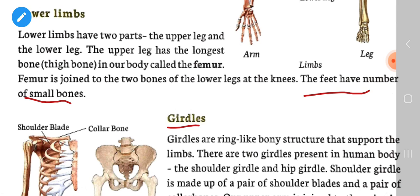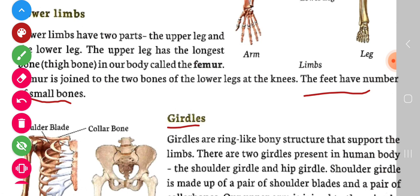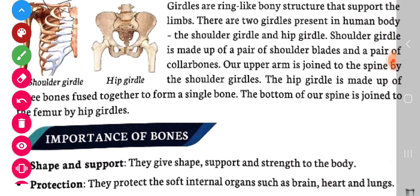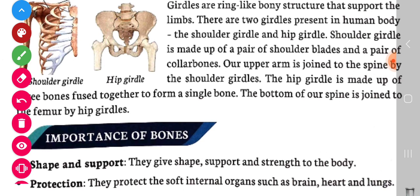Girdles are ring-like bony structures that support the limbs. There are two girdles present in the human body: the first is the shoulder girdle and the second is the hip girdle.